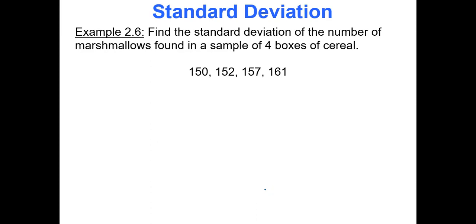Find the standard deviation of the number of marshmallows found in a sample of just four boxes of cereal. I'm going to calculate this by hand. The first thing we calculate is our mean, x̄. I'm going to add up the four data values and divide by four. Be very excited we only have four data values, otherwise this would become a very messy calculation. You get 620 over 4, which is 155.